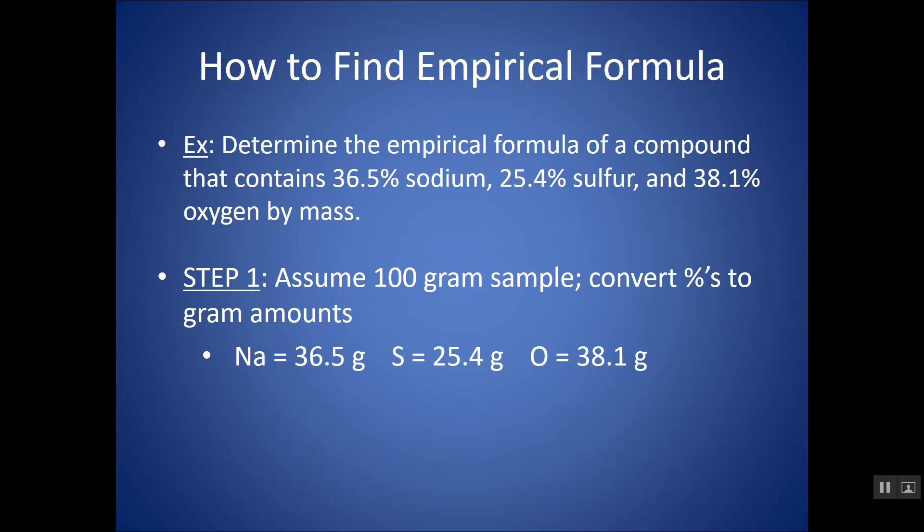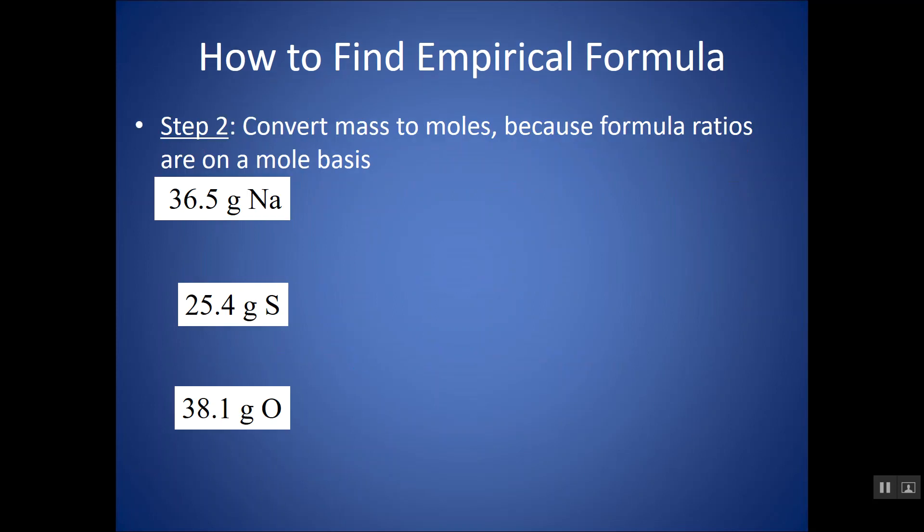Now, when in doubt, what are we going to do? When in doubt, we mole it out. We can't use masses to figure out these subscripts because the subscripts did not tell us mass ratios, but we can change these numbers into moles, and that will give us our subscripts. So our next step is to convert each mass to moles, and I'm going to do so by looking up each element's atomic mass or molar mass in my periodic table and separately converting each of these masses to moles.